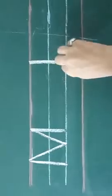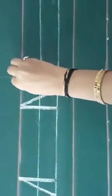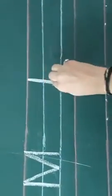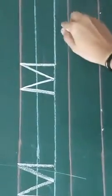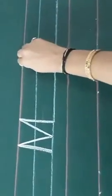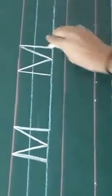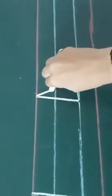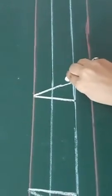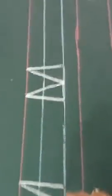First standing line, next up to down slant line, down to up second slant line, and again standing line. This is letter M. Standing line, slant line, second slant line and standing line. This is letter M. Standing line, slant line up to down, second slant line down to up, and again standing line. This is letter M.